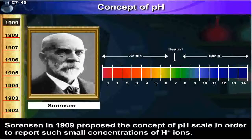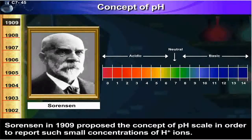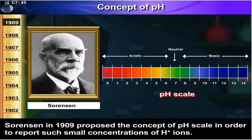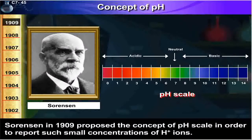Sorensen in 1909 proposed the concept of pH scale in order to report such small concentrations of H+ ions.